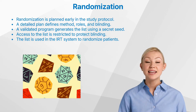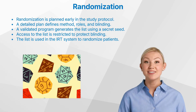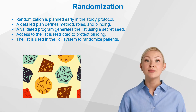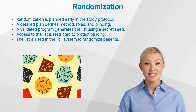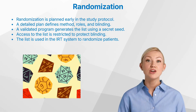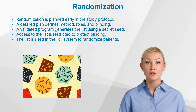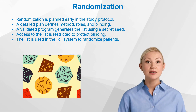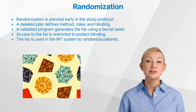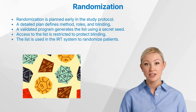From there, a statistician writes a randomization program — software code that can generate the actual randomization list. This program is then validated by a second statistician to ensure accuracy. Once validated, the program uses a random seed, a special code that determines the specific order of treatment assignments. This seed is critical because it allows the list to be reproduced exactly if needed, and for this reason it must be kept confidential.